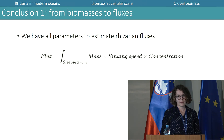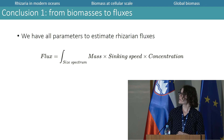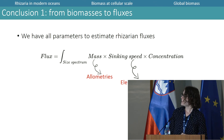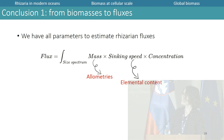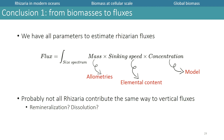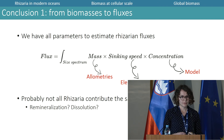As a perspective, from the global biomass we want to know how much of it is exported to the deep ocean. We now have all parameters to estimate fluxes over the entire size spectrum: mass from allometries, speed from elemental content data, and concentration from modeling. However, probably not all Rhizaria contribute equally to vertical fluxes, and we still need information about how remineralization and dissolution would affect this vertical export.